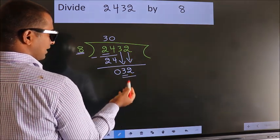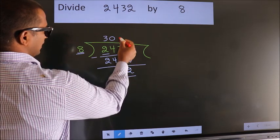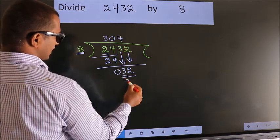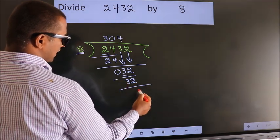So, 32. When do we get 32? In 8 table. 8 fours, 32. Now, we subtract. We get 0.